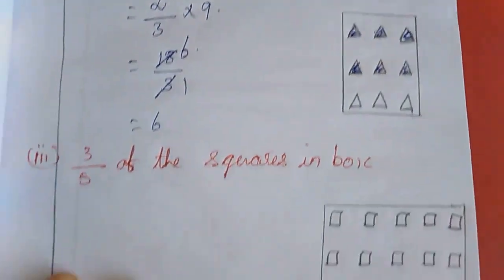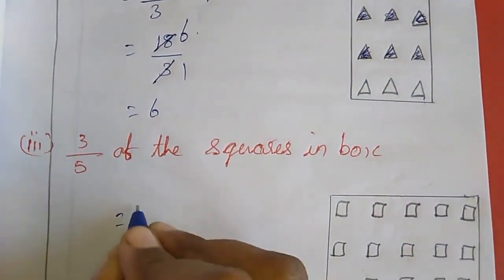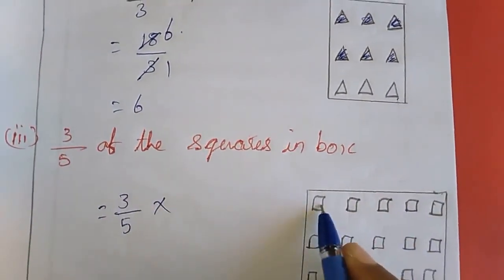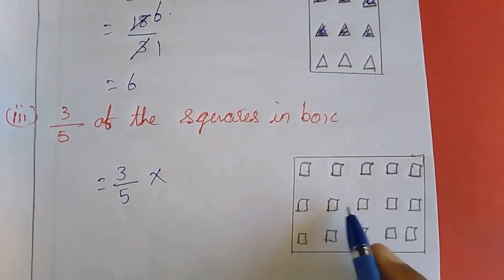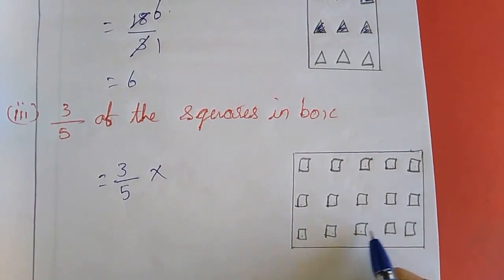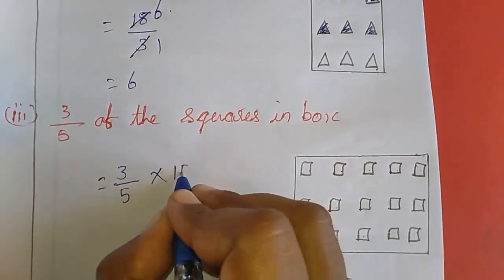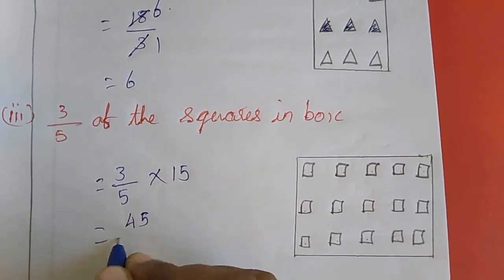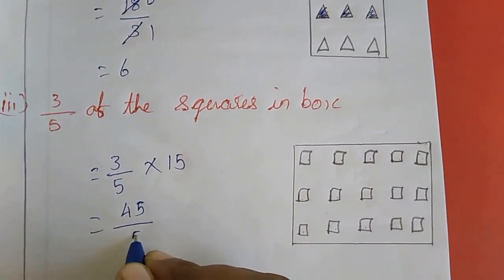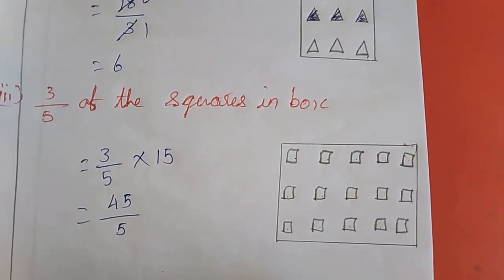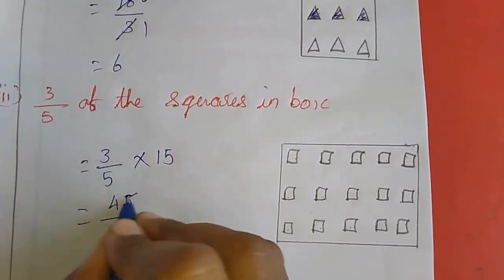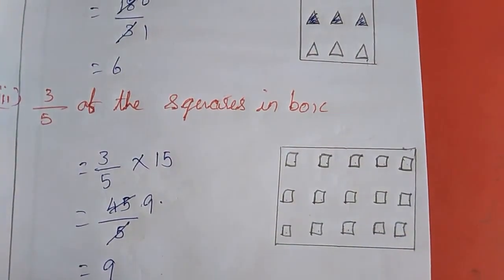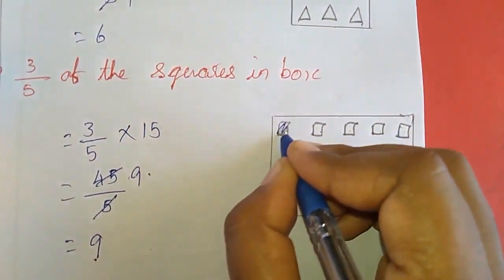Now the third sum — also the same. 3 by 5 of the squares in box. Count: 1, 2, 3, 4, 5, 6, 7, 8, 9, 10, 11, 12, 13, 14, 15. So 15. If you multiply these two numbers you will get 45 divided by 5. If you cancel you will get 9. So how many squares you want to share? 9 squares.